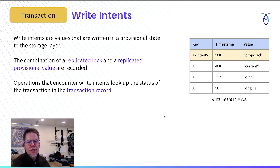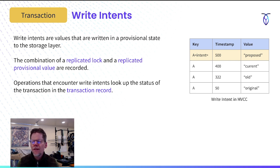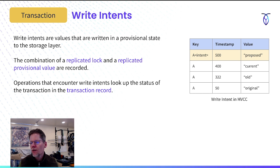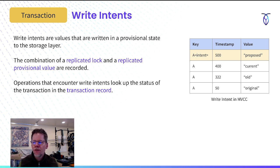So what are write intents? Write intents are values written to a provisional state in the storage layer — a combination of a replicated lock and a replicated provisional value. Any operations that encounter write intents have to look up the status of the transaction and the transaction record. On the right, we can see a write intent in MVCC where at timestamp 500 we are trying to update a row — we've put this intent into the MVCC key space as a proposed value, indicating it's just an intent. It exists for the life of the transaction until the third cleanup phase.